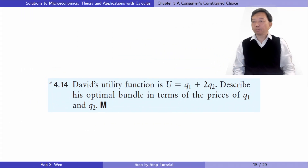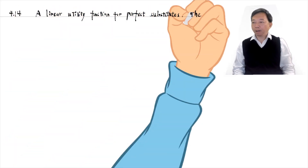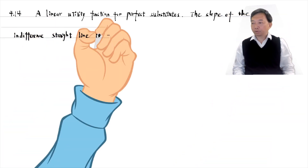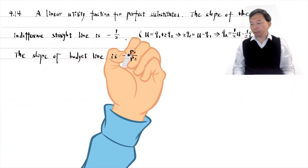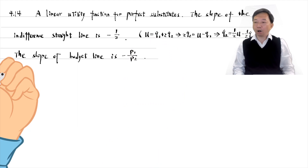Let's solve exercise 4.14. David's utility function is U equals Q1 plus 2 times Q2. Describe his optimal bundle in terms of the price of Q1 and Q2. It is a linear utility function for perfect substitutes. We draw the indifference curve and budget constraint diagrams to help solve the problem. The indifference curves are straight lines for the linear utility function. The slope of the indifference straight lines is minus 1 over 2. We compare the slopes of the indifference curve and the budget constraint to find the optimal consumption bundle.